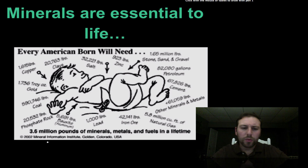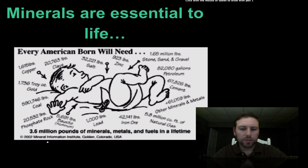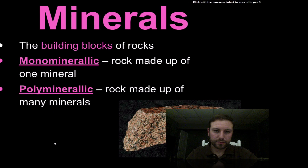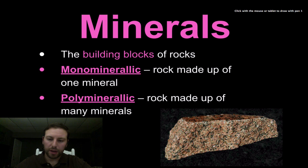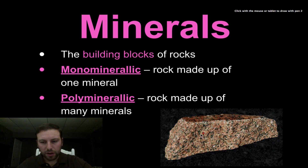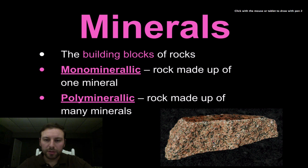Minerals are also essential to life. We need a certain amount of salts in our body to maintain homeostasis, and iron, lead, and a bunch of different compounds we need to basically live on a day-to-day basis. Minerals are the building blocks of rocks. We have mono-mineral or poly-mineral rocks — rocks made up of one mineral or more than one mineral. Here is a nice piece of granite, and we can see a bunch of different colors in it, which represent different minerals.